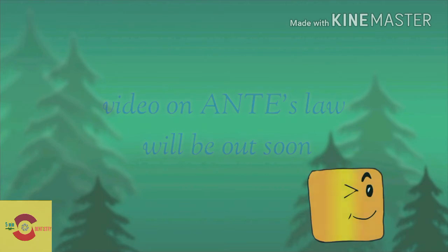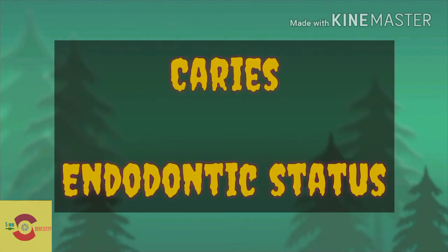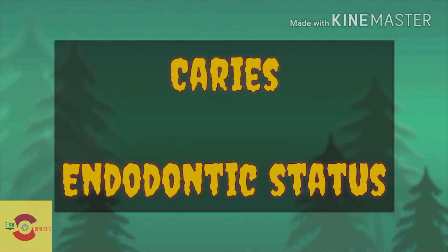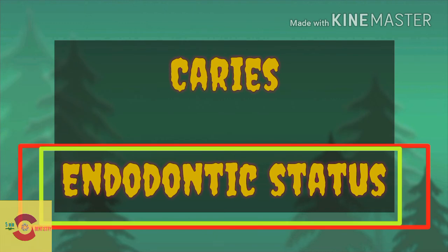We also have to consider the caries and endodontic status of the abutment tooth. Caries are evaluated on all possible surfaces; if there is deep caries, vitality testing may be needed, and when in doubt, intentional root canal treatment is done. Abutments are also evaluated for wear facets, abrasions, and hypoplasia. Abutment teeth with poor pulpal health need endodontic treatment prior to tooth preparation.